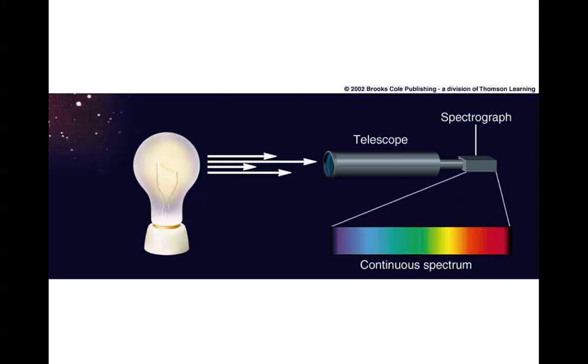What Kirchhoff said was that if you look at an opaque object that's hot, what you'll see is a continuous spectrum. So we know this opaque object is a black body. A black body emits at all wavelengths without any interruption, so you get a continuous spectrum, a rainbow, from it.